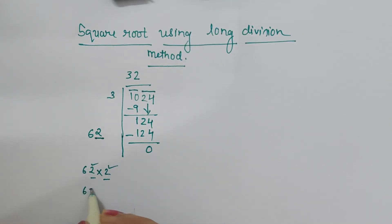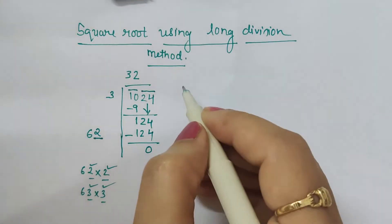We have to check for which new number when attached with 6 gives us value equal to this or just less than this. We got the equal value, so square root of 1024 is 32.